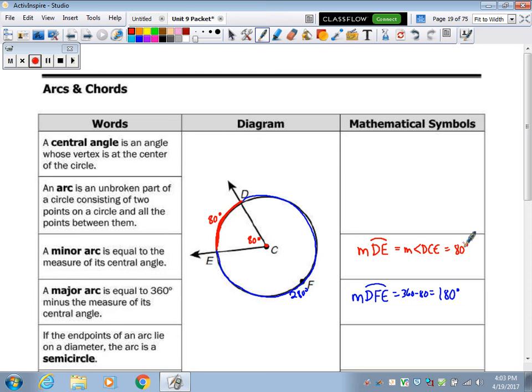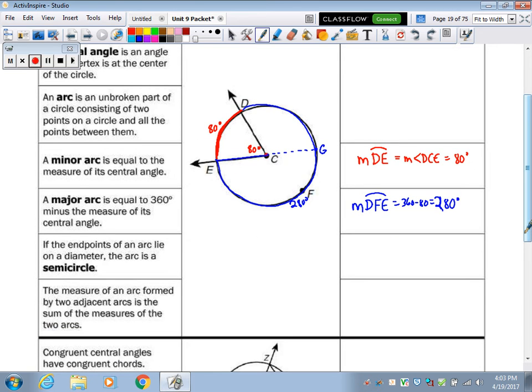Oh, this is 280, sorry. I just made up those numbers to go with the picture. So if the end points lie on a diameter, like let's say this kept going and created a diameter, then this arc would be 180 degrees. So the whole circle is 360 degrees, half the circle is 180 degrees, and that's called a semicircle, half the circle.